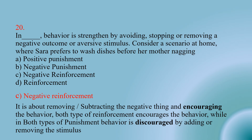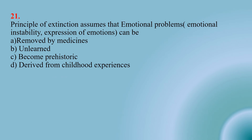Number twenty-one: The principle of extinction assumes that emotional problems such as emotional instability and expression of emotions can be — Option A: removed by medicines; Option B: unlearned; Option C: become prehistoric; Option D: driven from childhood experiences. The right option is B — unlearned.